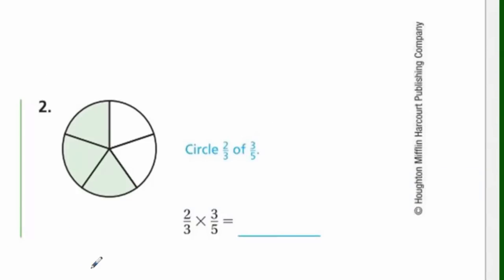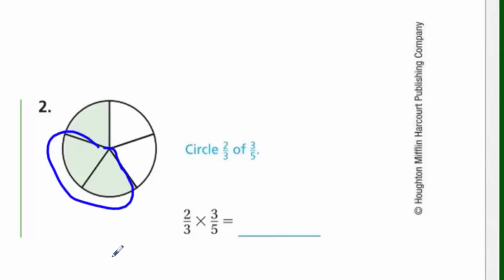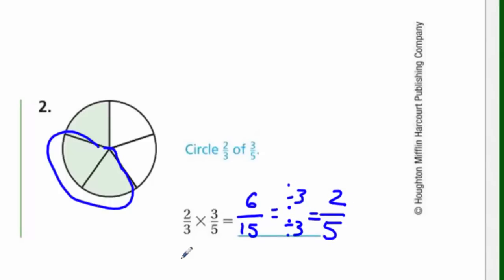Circle two-thirds of three-fifths. They've already shown the three-fifths shaded. Now I'm going to circle two-thirds of that amount. Since there are three shaded sections, each is one-third. Circling two-thirds gives us two of those shaded sections. Two-thirds of the three-fifths, based on our entire whole — if we multiply across we get six over fifteen, and dividing by a common factor of three gives us two-fifths. So we have two out of five altogether: two-thirds times three-fifths equals two-fifths.